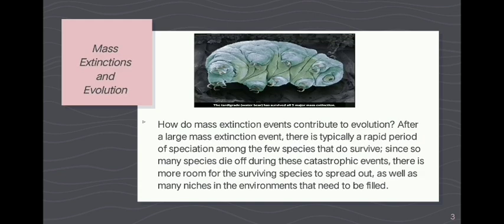How do mass extinction events contribute to evolution? After a mass extinction event, there is typically a rapid period of speciation among the few species that survive. There is less competition for food resources, shelter, and mates, allowing the leftover species to thrive and reproduce rapidly.